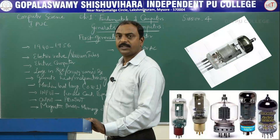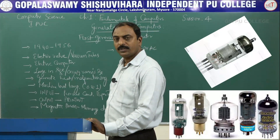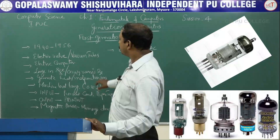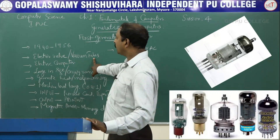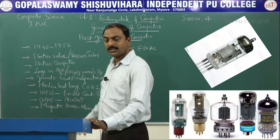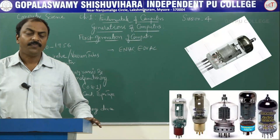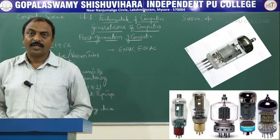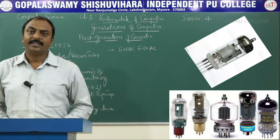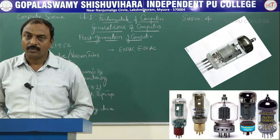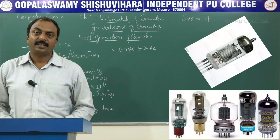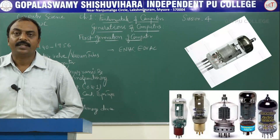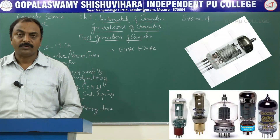First generation of computers. The period of this computer is from 1940 to 1956. These computers were using electric valves or vacuum tubes as the main electronic component. If you have seen old radios, they were very big in size, just like a box, and inside they were using electric valves. Similarly, a large number of electric valves were used to set up these first generation computers.